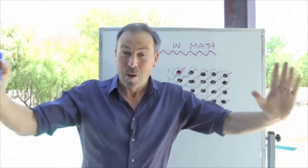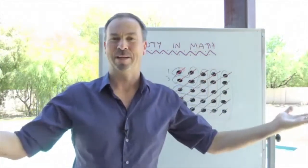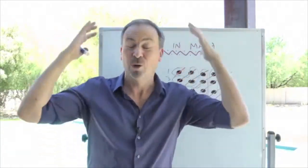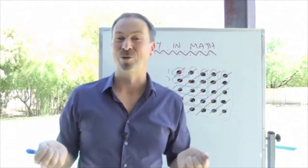So what's the sum of the first thousand odd numbers? It must be a thousand squared, a million. What's the sum of the first million odd numbers? It's got to be a trillion. Isn't that crazy? Isn't that beautiful? Isn't that joyous?